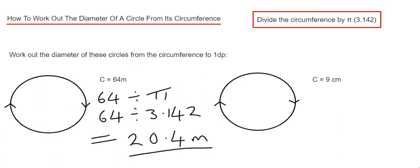Okay, so let's have a look at example two then. This time you have a circumference of 9 centimeters. So again, we just divide the circumference by pi. So if you don't have your scientific calculator, just do 9 divided by 3.142.